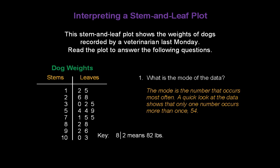What is the mode of the data? The mode is the number that occurs most often. A quick look at the data shows that only one number occurs more than once, and that's 54. So the mode is indeed 54.